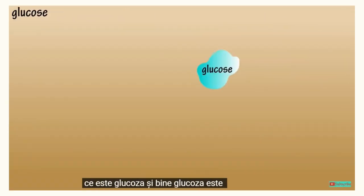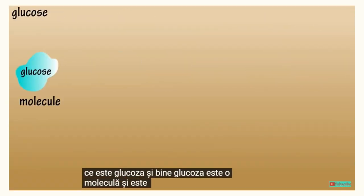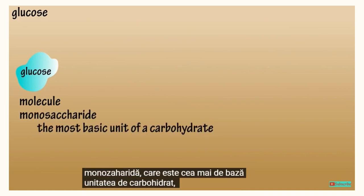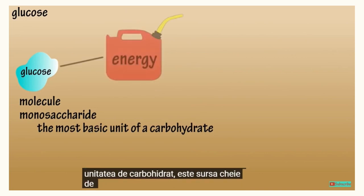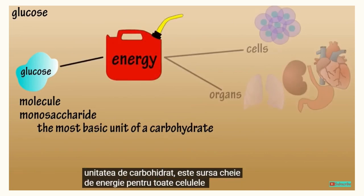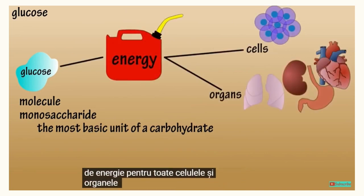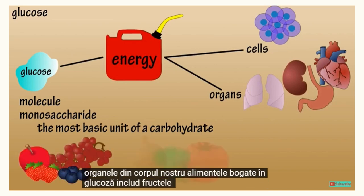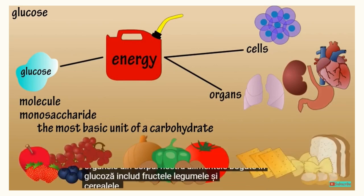What is glucose? Well, glucose is a molecule, and it's known as a monosaccharide, which is the most basic unit of a carbohydrate. It's the key source of energy for all cells and organs in our bodies. Foods high in glucose include fruits, veggies, and grains.